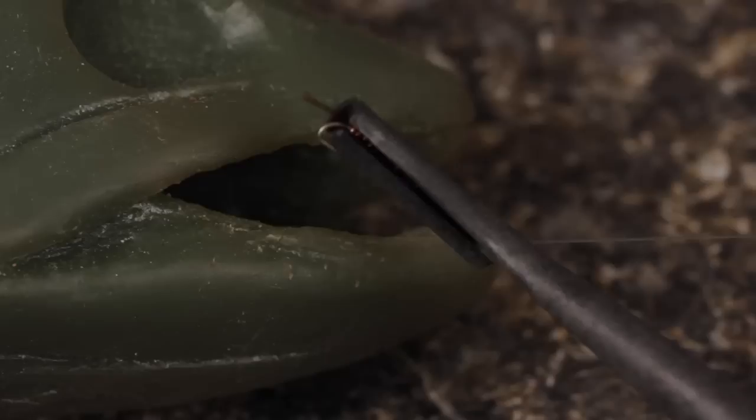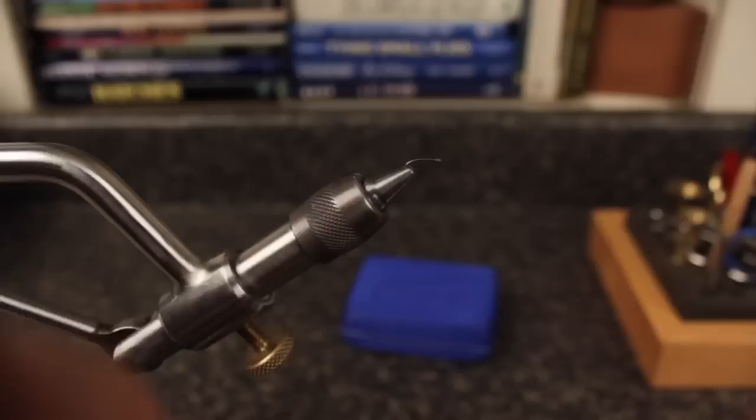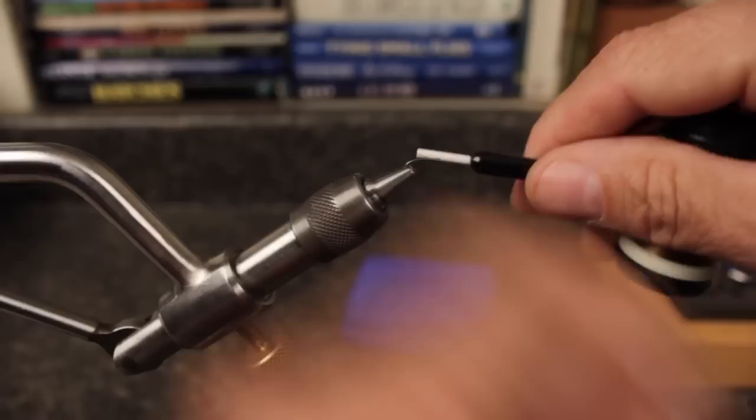For thread, on all types of small flies, it's hard to go wrong with 6-0 Danville Flymaster. Here, I'm using Olive. Start your thread on the hook shank, leaving some space behind the eye. Take a few wraps rearward before snipping or breaking off the tag.